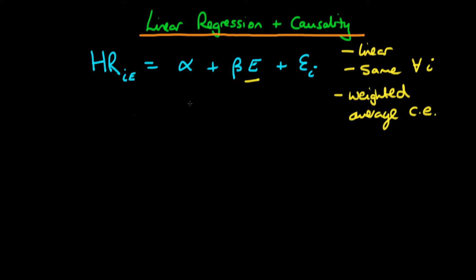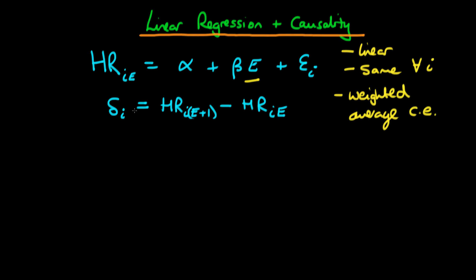What we're actually interested in deriving is the causal effect of exercise — specifically, the difference between the potential level of heart rate individual I would achieve if they exercised E plus one times versus just E times. Generally, we take the unconditional expectation of this difference, delta_I, and that gives us the average treatment effect, or the average causal effect.